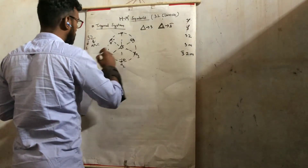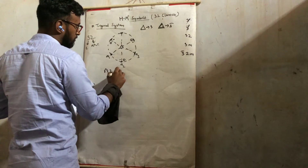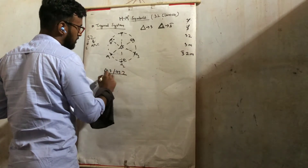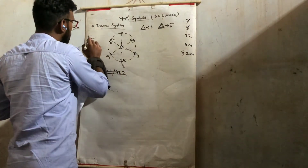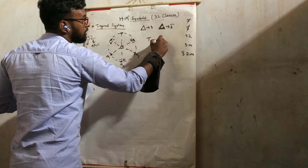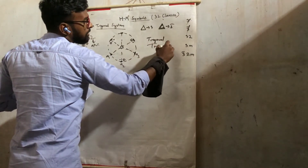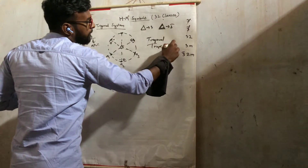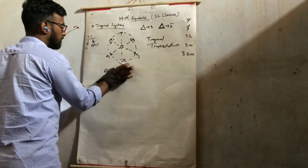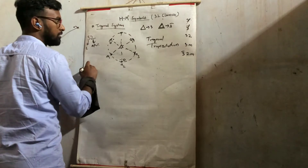3,2 is known as — just as 6,2,2 and 4,2,2 were both called trapezohedrons — here also, 3,2 will be known as trigonal trapezohedron.